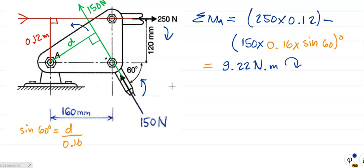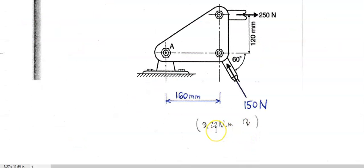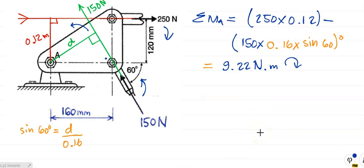And if I go back to my sketch, which is that over there, yippee, 9.22 newton meters clockwise, and that's what I get there. Okay, so that's correct. Okay people, I will see you in the next lesson on moments.